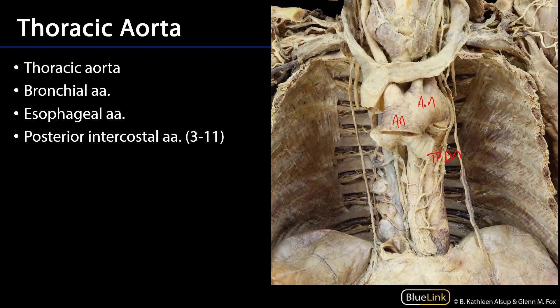It's going to host both parietal and visceral branches. Its parietal branches are going to serve the thoracic wall, so those are going to be posterior intercostal arteries — we'll have one at every vertebral level — and there will also be superior phrenic arteries supplying the diaphragm with blood.